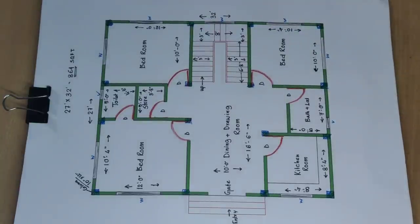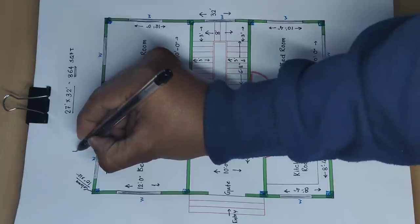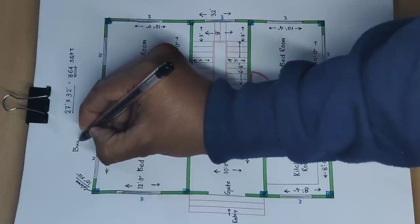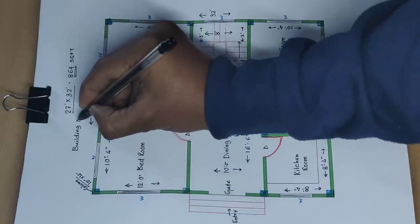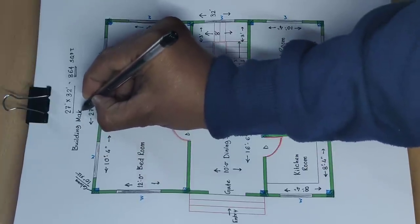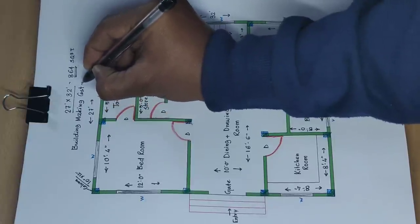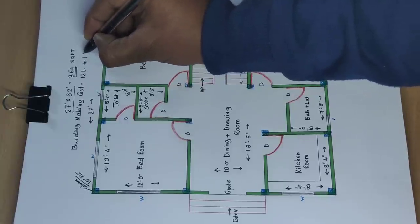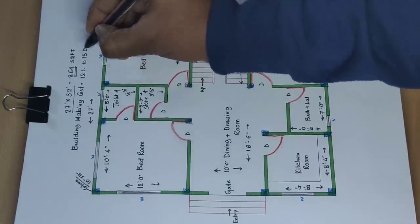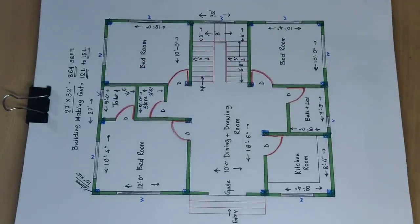Now the total cost estimate: building construction cost is 12 lakh to 15 lakh rupees.